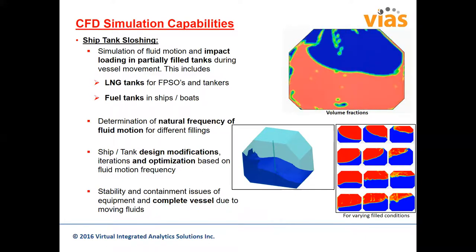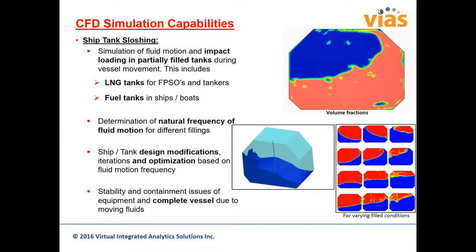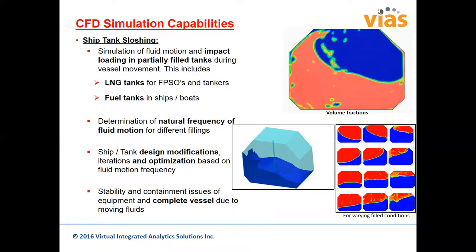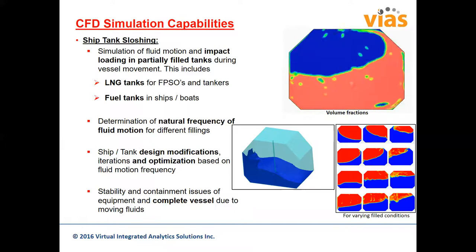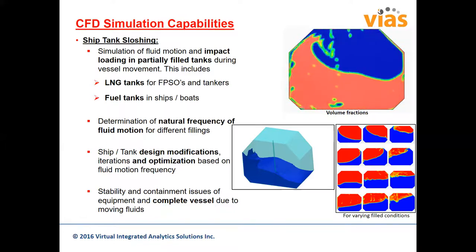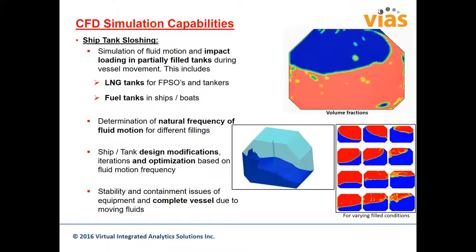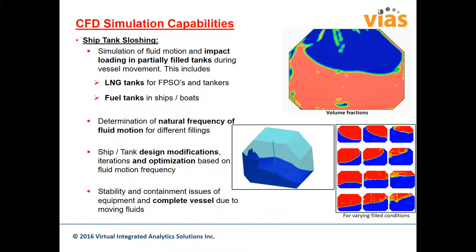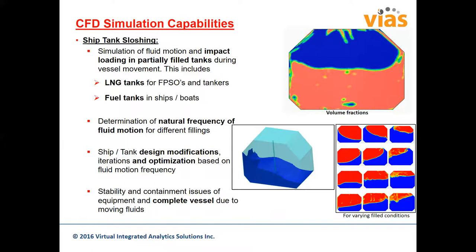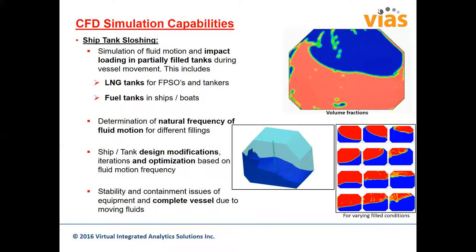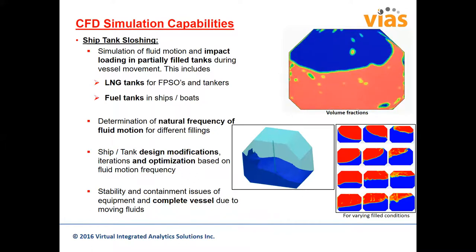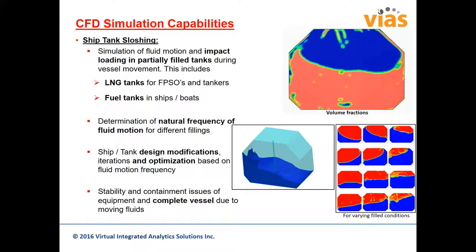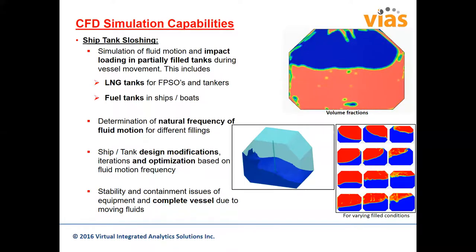Sloshing has been a persistent issue in marine transportation, typically found nowadays with LNG tanks and fuel tanks. The concern is usually looking at the natural frequency of fluid motion for different fill levels, conditions, and operating frequencies. The ship and tank design may be modified and optimized to reduce those loads, ensuring the load frequency is not correlated with the natural frequency of the supporting structure. Finally, stability and containment issues of equipment and the complete vessel due to moving fluid are also considered.